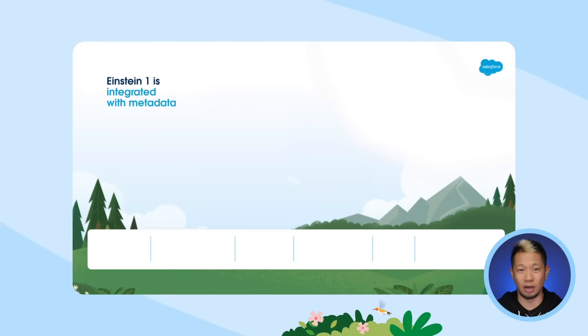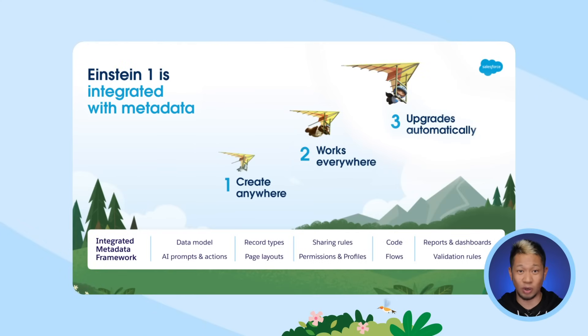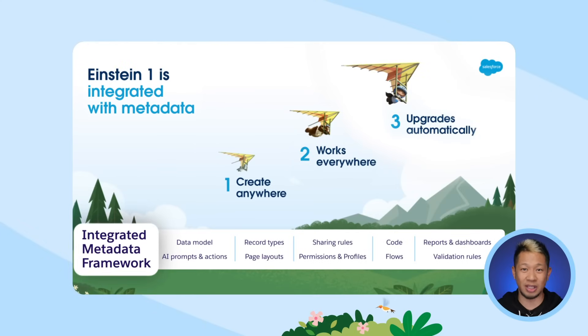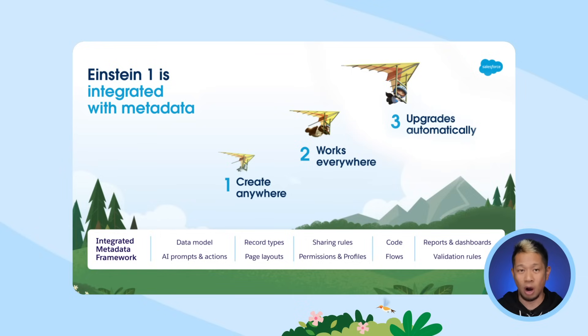This whole generative AI thing couldn't possibly get any cooler, right? Well, brace yourself. Salesforce introduced the Einstein One platform to help you safely connect any data and use AI in all your Salesforce apps and workflows. Since it's built on what's called the Salesforce Metadata Framework, the data tools and AI features in the Einstein One platform are readily available in any Salesforce product that you use. Think of the Metadata Framework as the bridge that connects data between all those different apps.